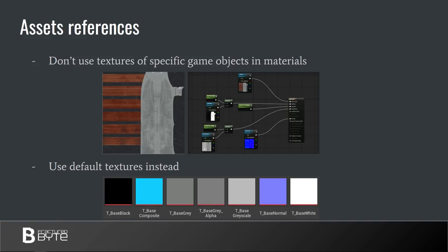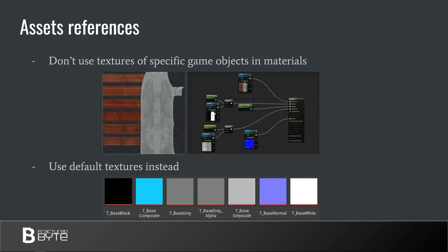It will stay in memory even if all of its material instances inherited from this material use different textures. The better decision would be to use a set of small default textures. You could see some we use in our projects: base black, base composite, base gray in linear color space, base gray alpha using alpha compression, base grayscale using grayscale compression, base normal, and base white. We found these textures to be more than enough for pretty much every project, so feel free to use them.